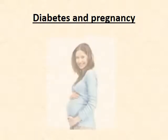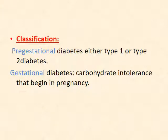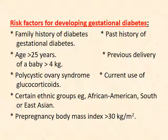Regarding diabetes and pregnancy, the classification includes: pre-existing diabetes — type 1 or type 2 — diagnosed before gestation, or gestational diabetes, which is carbohydrate intolerance that begins in pregnancy. Risk factors for gestational diabetes include family history of diabetes, previous gestational diabetes, age more than 25, previous delivery of macrosomic babies over 4 kg, polycystic ovary syndrome, use of corticosteroids, certain ethnicities such as African-American or South Asian, and pre-pregnancy BMI greater than 30.